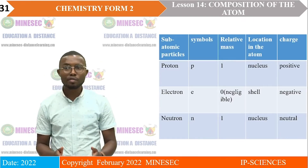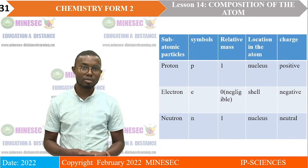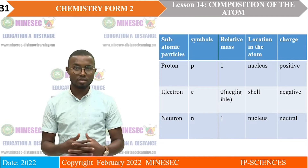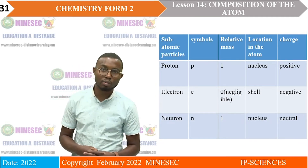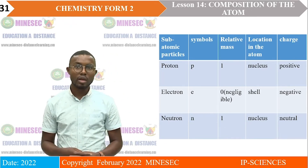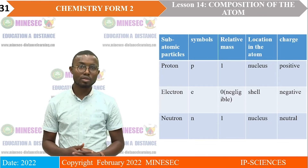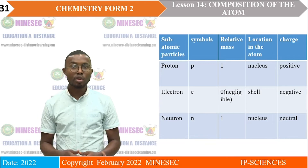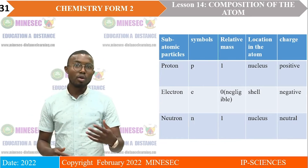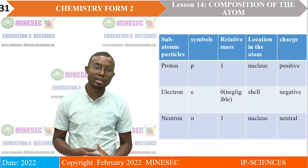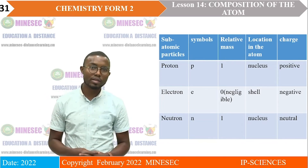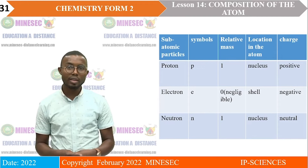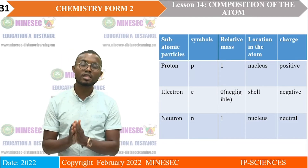The table below gives a summary of the subatomic particles. First, the proton: symbol p, relative mass 1, found in the nucleus, charge positive. Second, the electron: symbol e, relative mass 0 (or 1/1840, which is negligible), found on shells, charge negative. Third, the neutron: symbol n, relative mass 1, found in the nucleus, relative charge 0 (neutral). The nucleus is positively charged overall because protons carry positive charge while neutrons carry no charge.